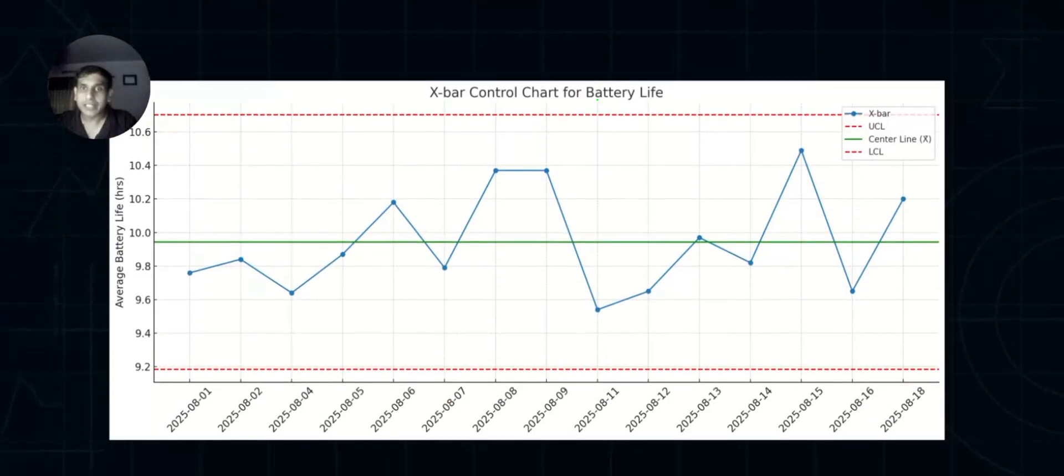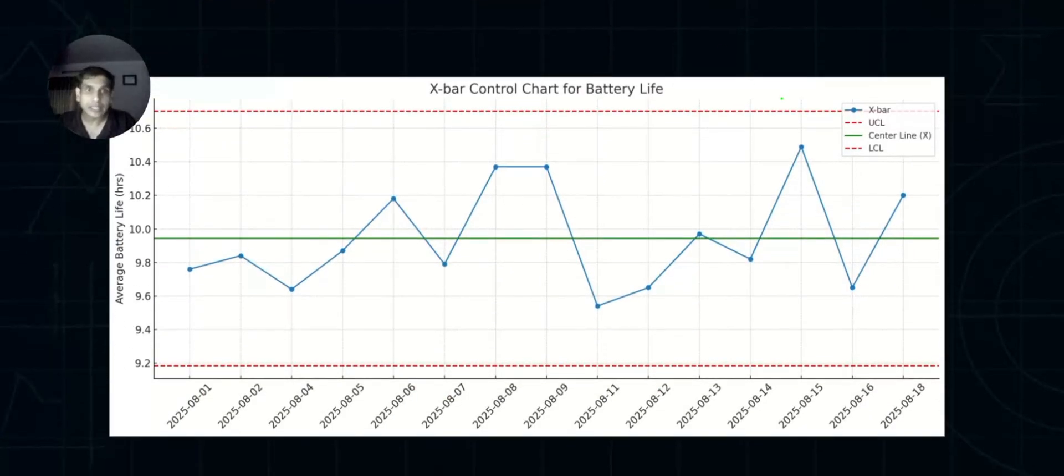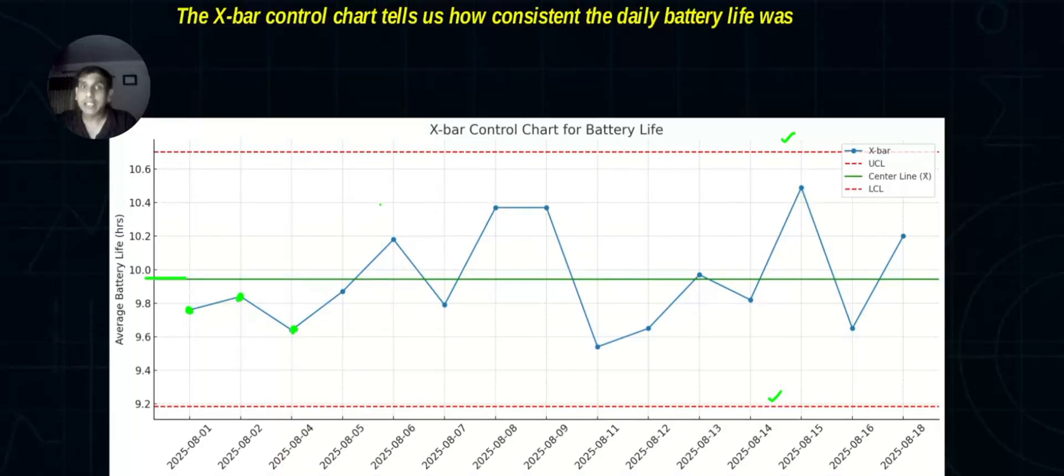This is the X-bar control chart. Can you see this dotted red line above and below? These are the upper control line and the lower control line. Corresponding to the date, they have all the data values. X-bar-bar means you calculated X1-bar, X2-bar daily. Now we're finding X1-bar plus X2-bar plus X3-bar, divided by 15 days in this example. That's how we created the center line. By looking at this, I'm able to understand the batteries are behaving consistently. The X-bar control chart tells us how consistent the daily battery life was.